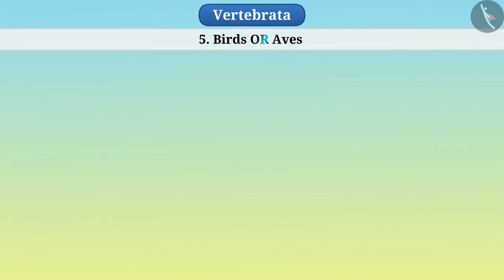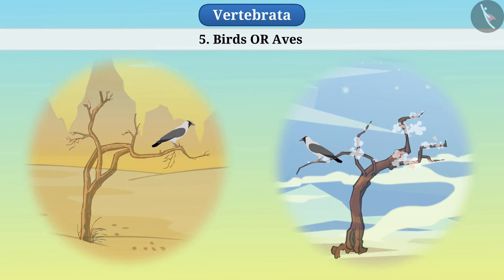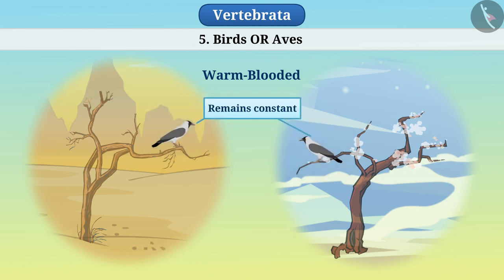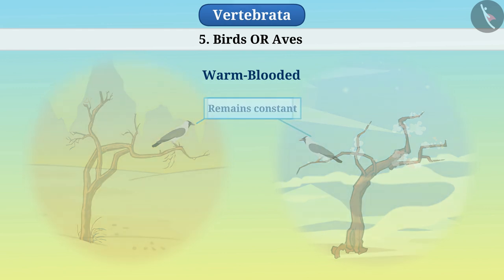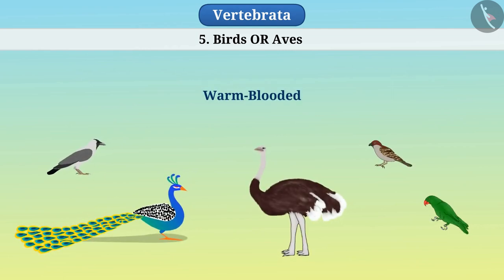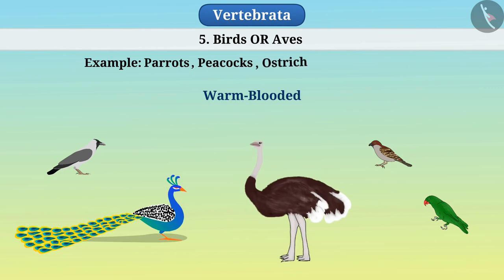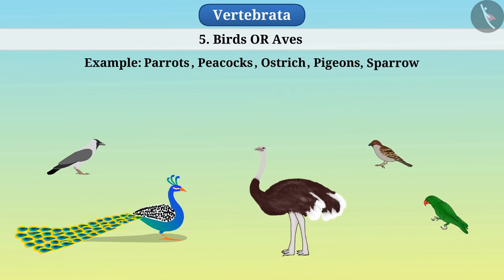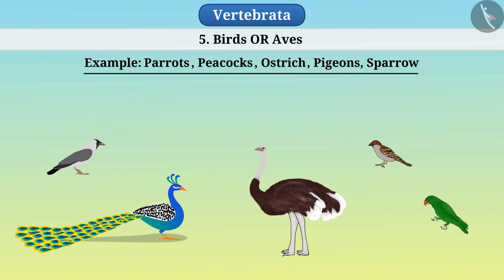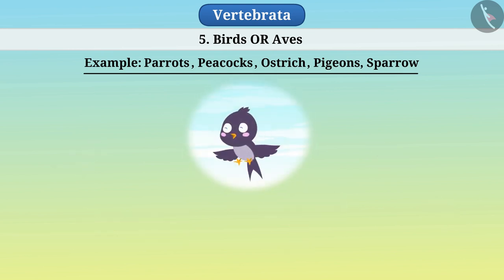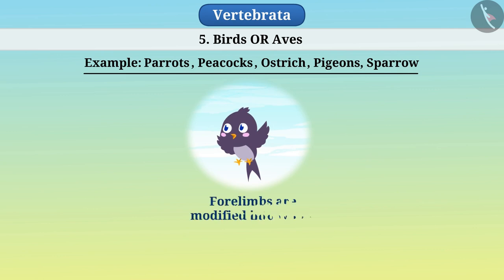Birds or Aves are warm-blooded animals, meaning their body temperature remains constant. These include birds such as parrots, peacocks, ostrich, pigeons, sparrow, etc. They have two pairs of limbs — the forelimbs are modified into organs that help in flying, i.e., wings.